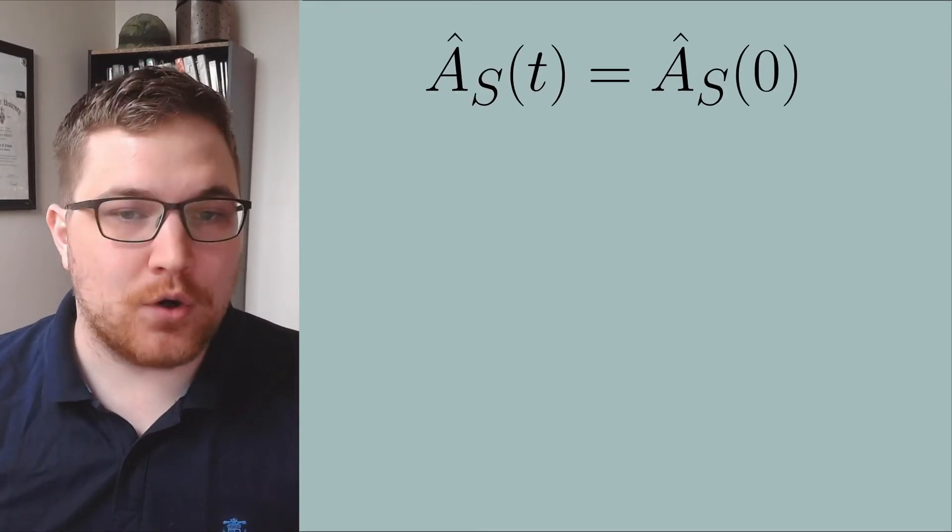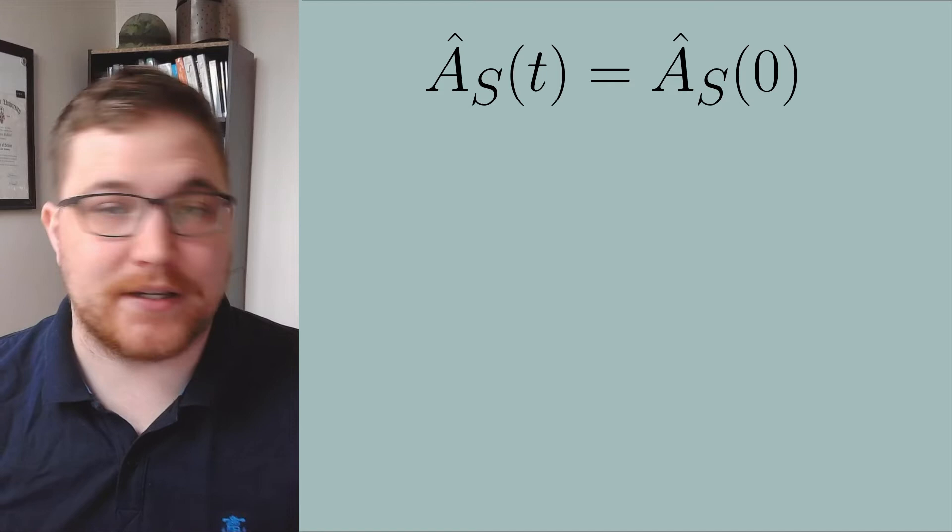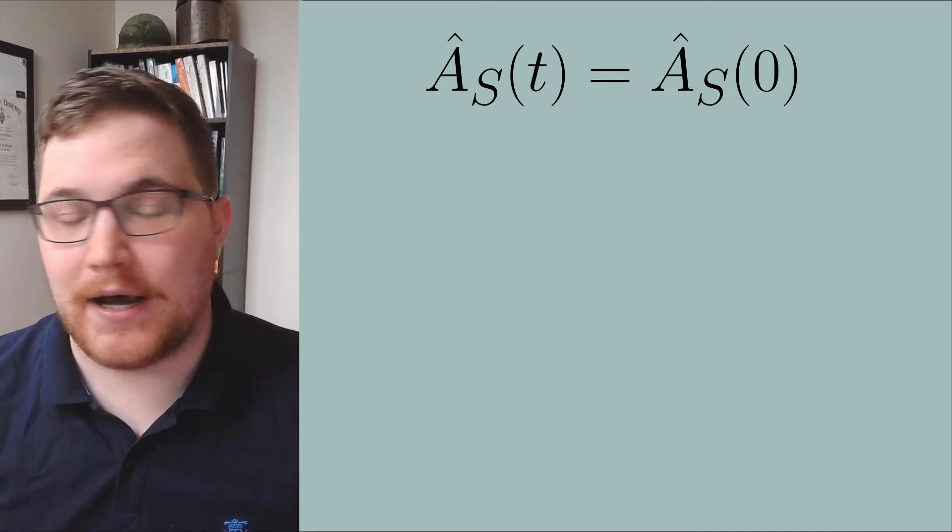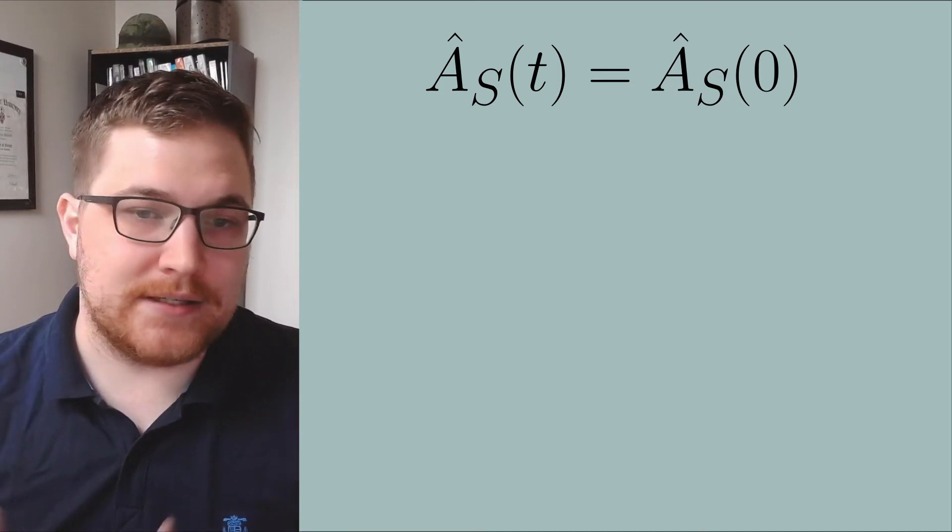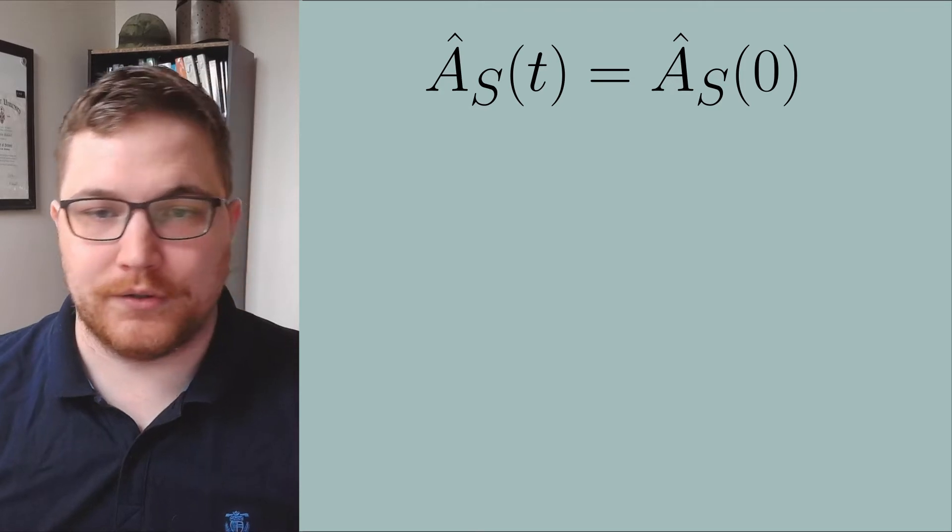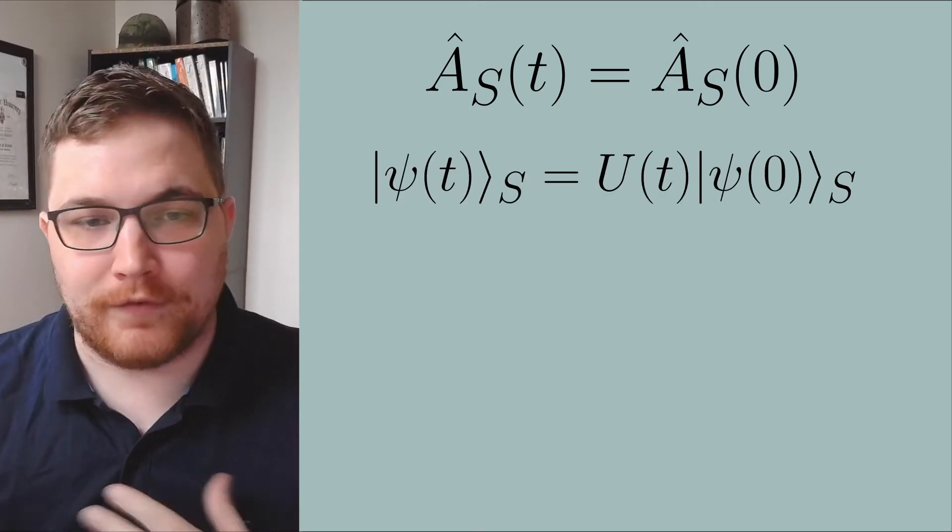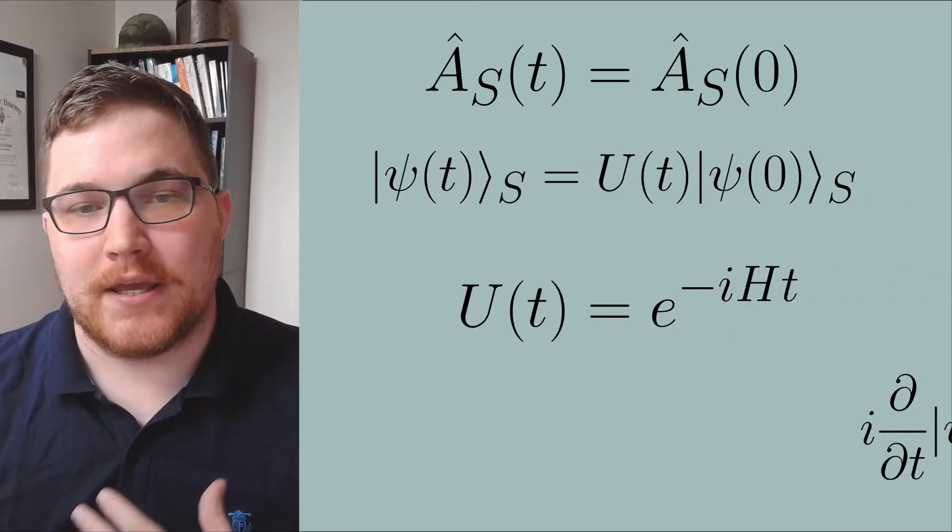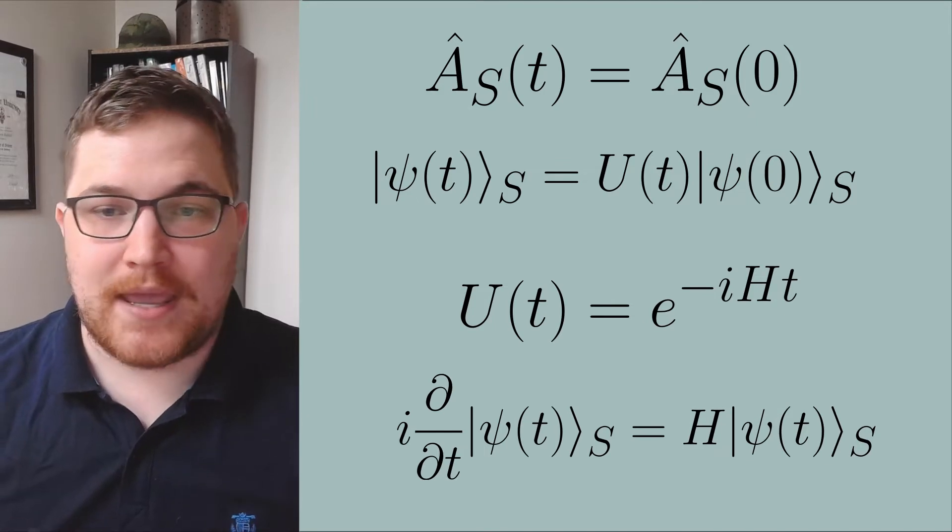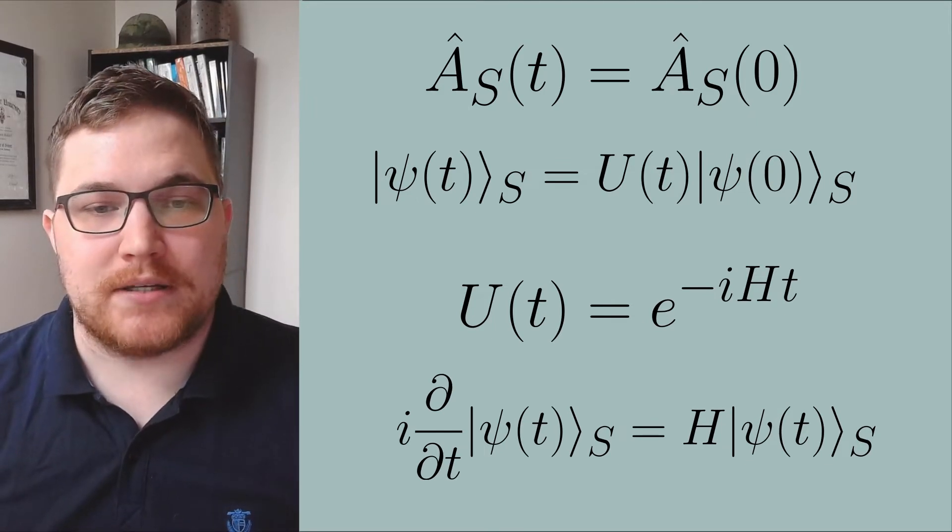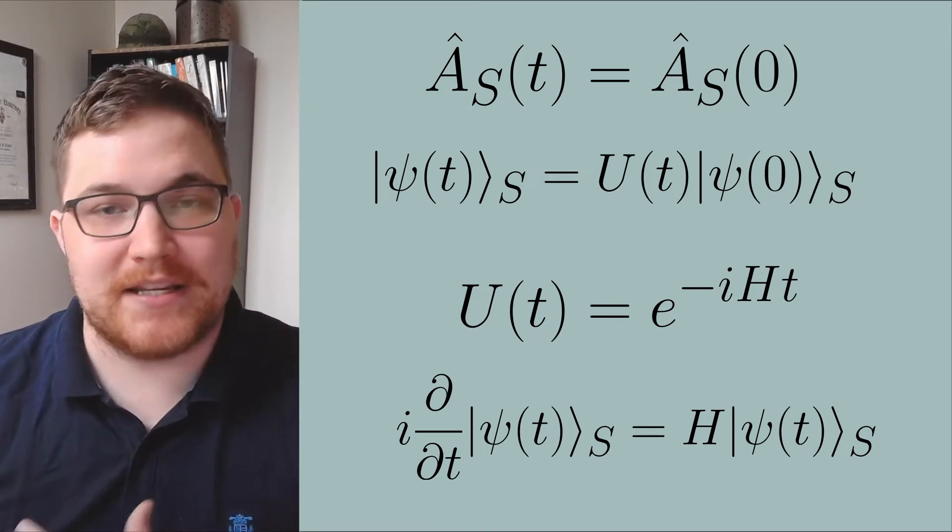So the first picture is the Schrödinger picture. Observables are time-independent quantities unless we attach explicit time-dependence to them like a time-varying magnetic field. The state vectors evolve in time according to the Schrödinger equation.